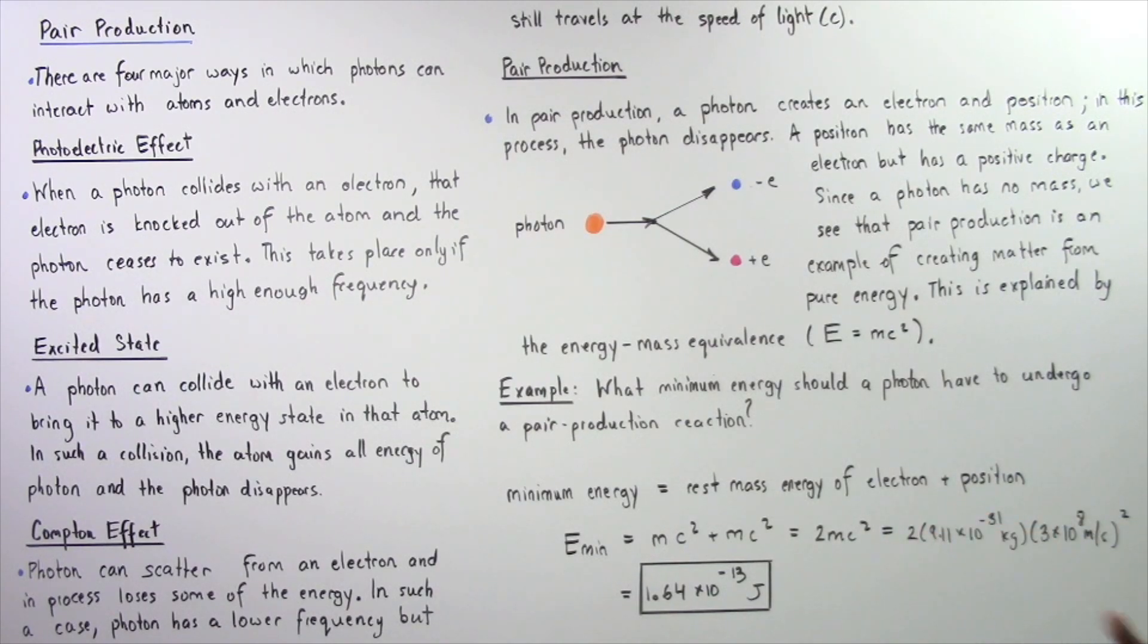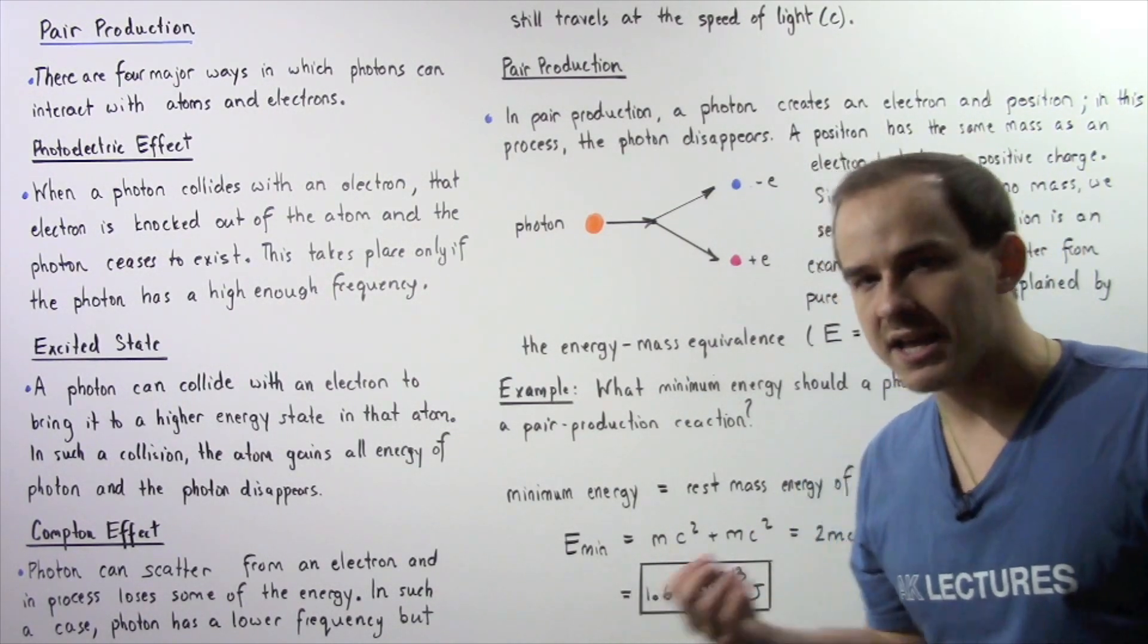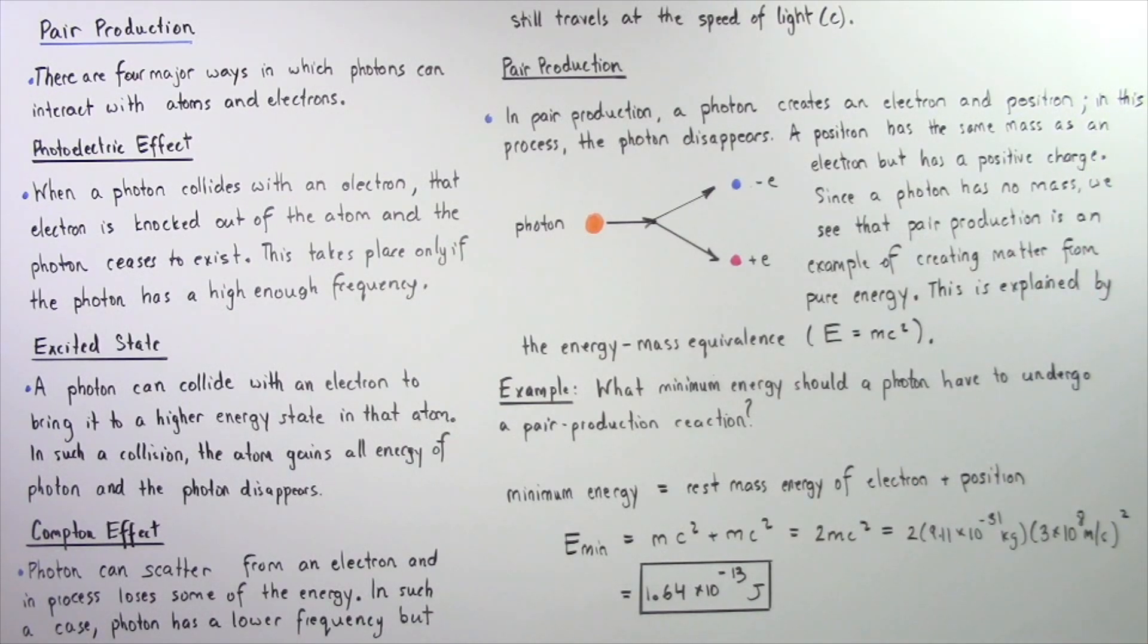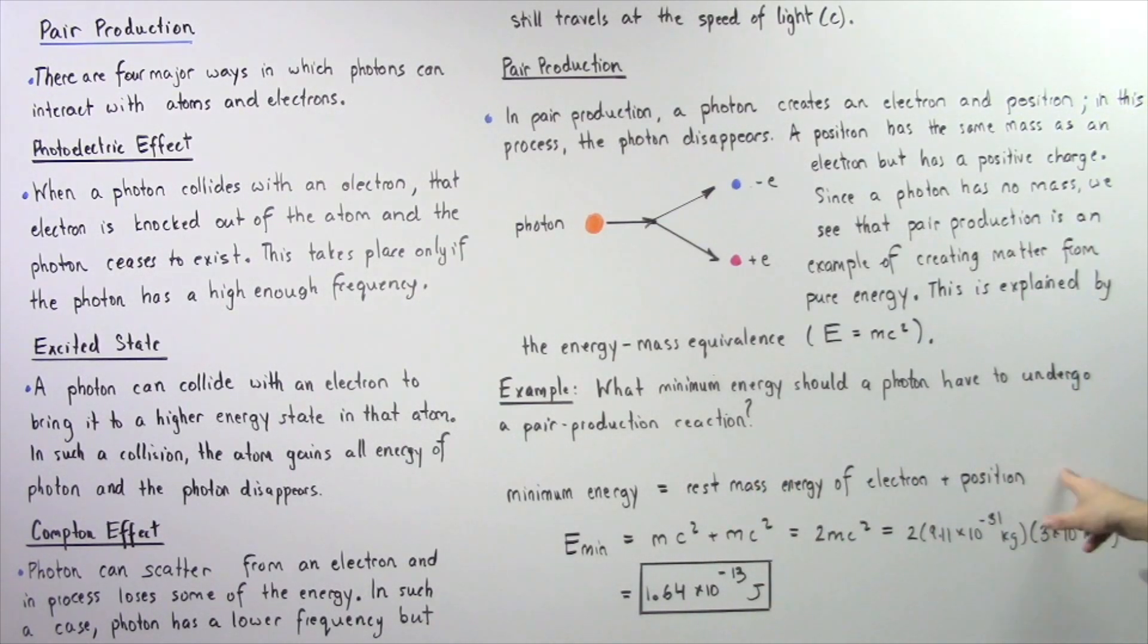So M is simply the mass of our electron, 9.11 times 10 to negative 31 kilograms. C is the speed of light, 3 times 10 to the 8 meters per second. We square that, multiply, and we get about 1.64 times 10 to negative 13 joules of energy.